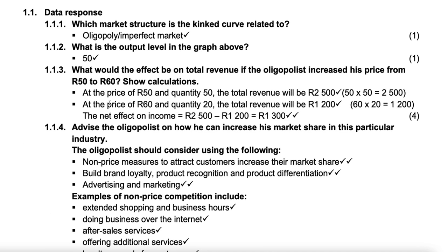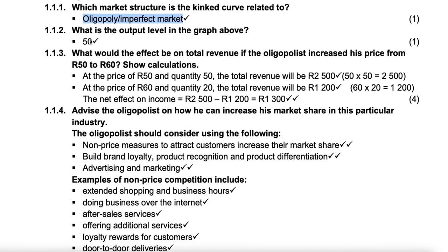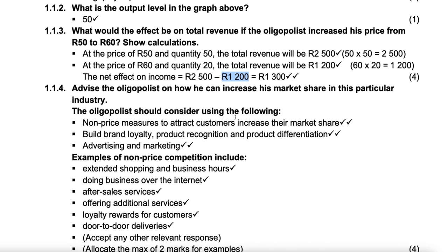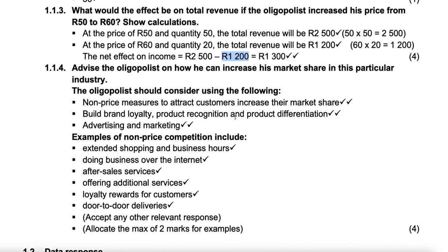Which market structure is this? We said it's oligopoly. The output is 50 units. Total revenue is going to decline by 1,300, because that's the difference between the initial total revenue and what it would be if the price went up.